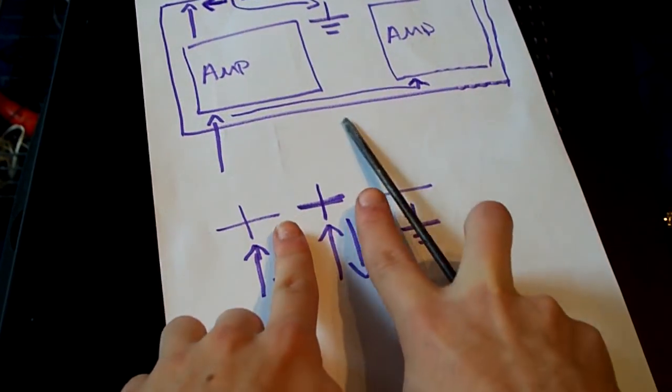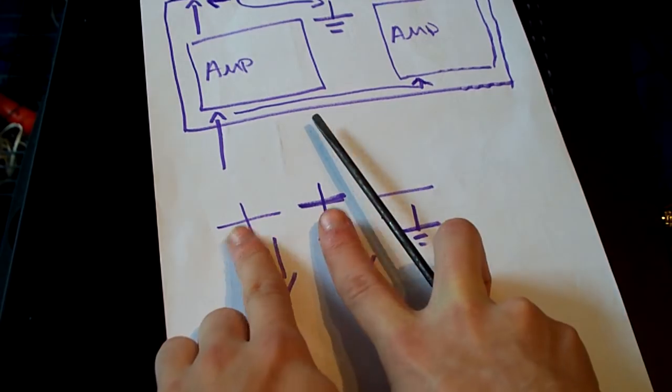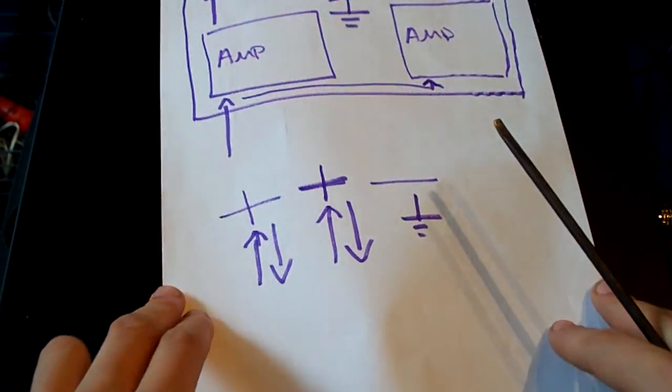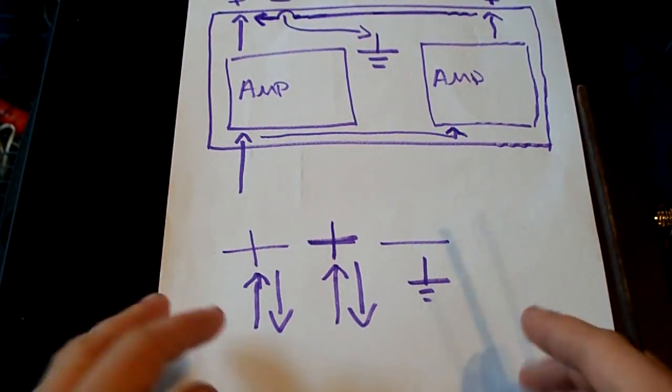Here you go. So you can see here, whilst one pushes, the other one pushes, pulls, pushes, pulls, pushes, pulls, giving you, like, double the amperage, basically. So it means it can push more amps, basically.